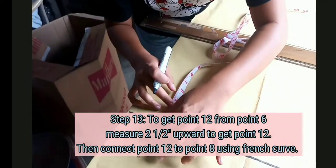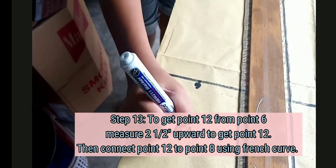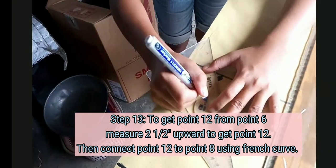To get point 12, from point 6, measure 2 and 1 half upward. Then connect point 12 to point 8 using French curve.